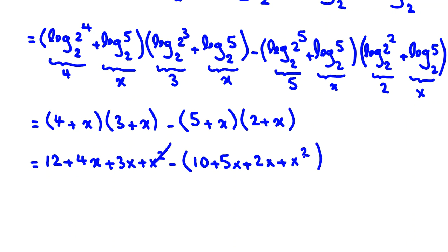So here, we have x squared minus x squared, which cancels. These parts equal 7x. Because we have minus here, these two 7x terms will be canceled. We have only 12 minus 10, which is 2.